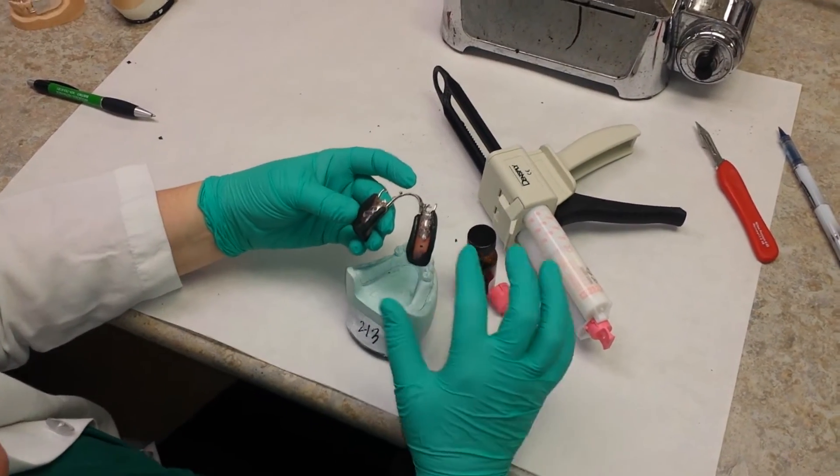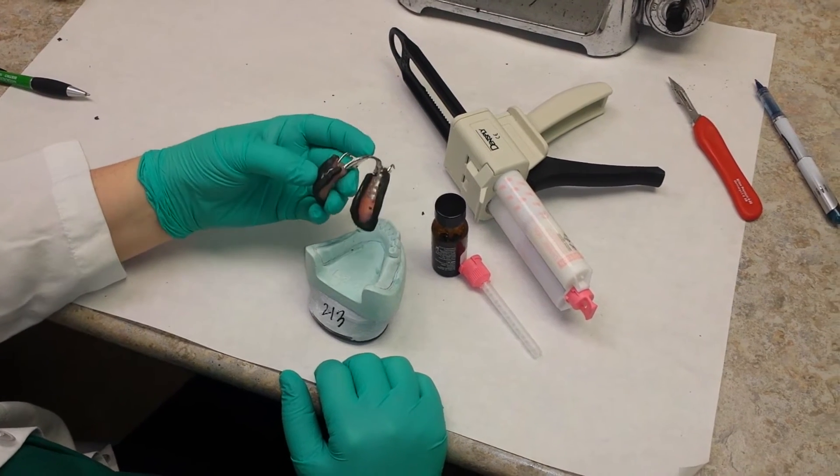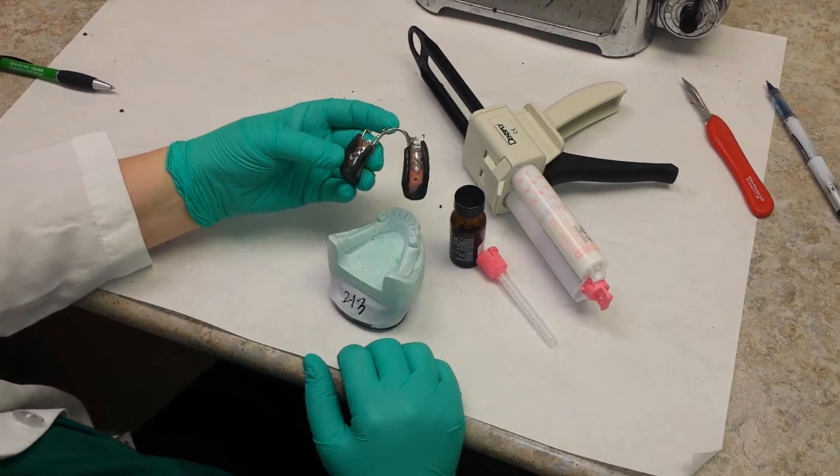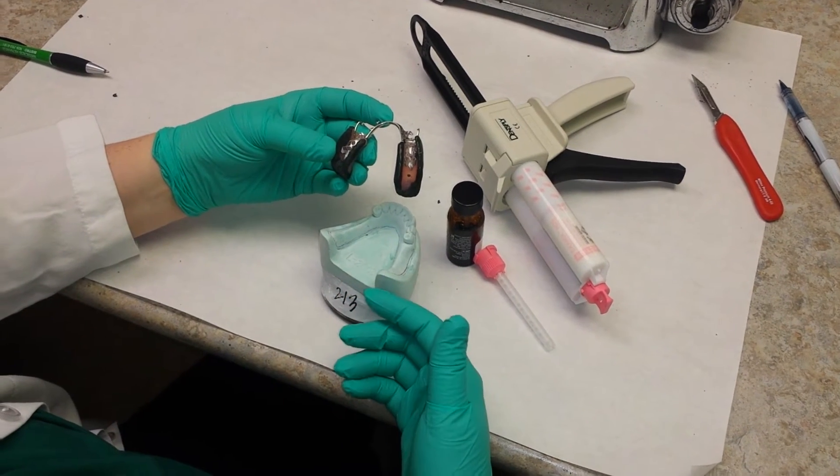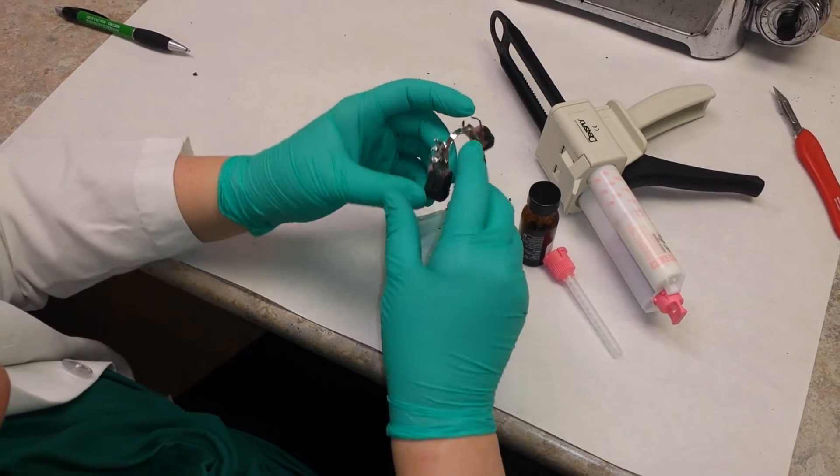We finished doing the border molding and trimming the border molding for the posterior sections on both sides. Obviously when you take the impression, you're going to take the impression on both sides at the same time. I mean, I guess you could do one side at a time, but it'd be a little hard.